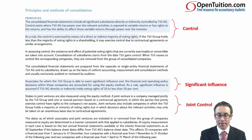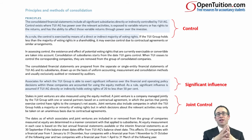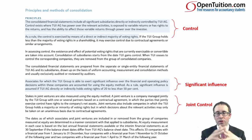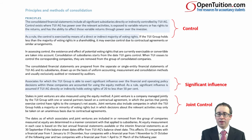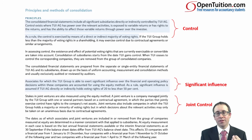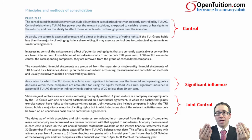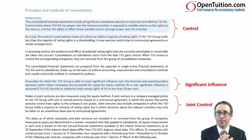Then it covers joint control — where by yourself you can't pass any resolutions, but two companies come together, say 50/50, and then you jointly control that business. There has to be a statutory legal requirement that decisions are made jointly. So even if you own 60 and 40, it could be joint control because you both have to mutually agree.